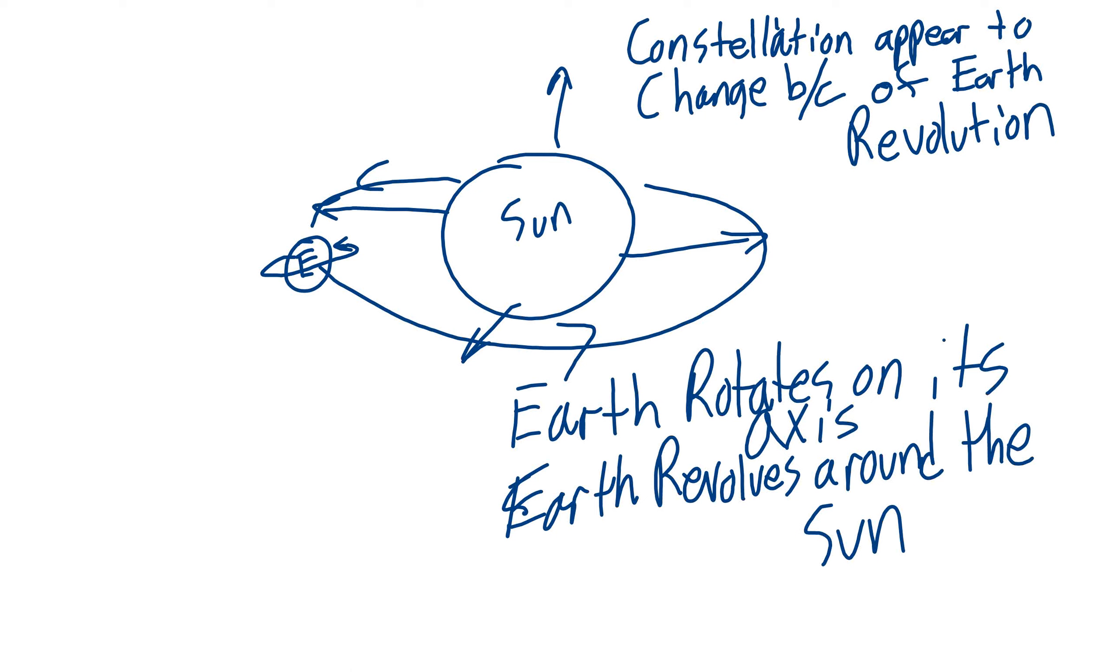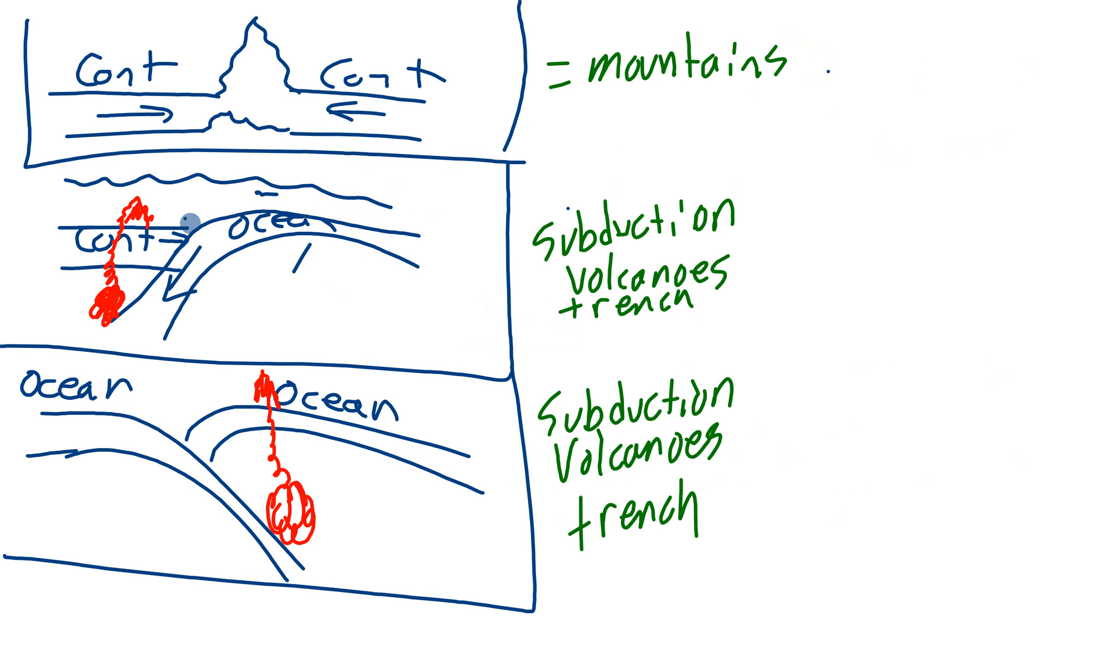The reason they change or appear to change is because of the revolution of the Earth around the Sun. So if you are, here's the Earth, you're going around the Sun. You're gonna see different stars here than when you're over here. So you see different constellations throughout the year because of the way the Earth revolves around the Sun.